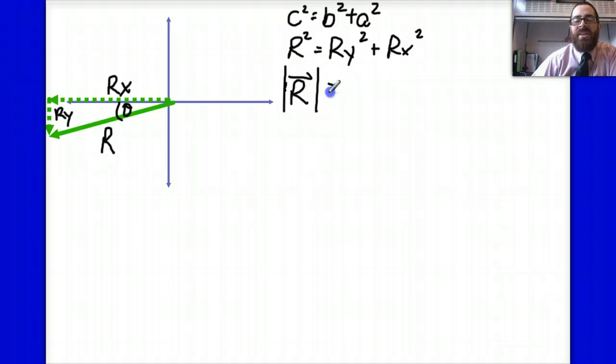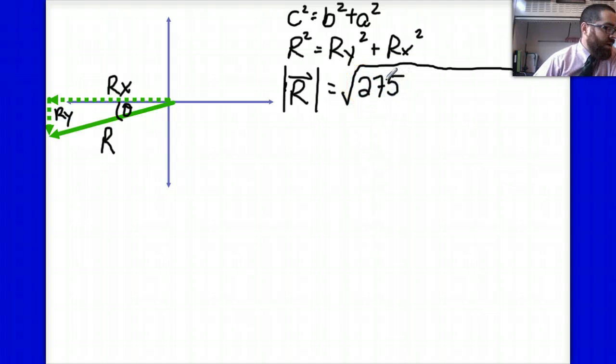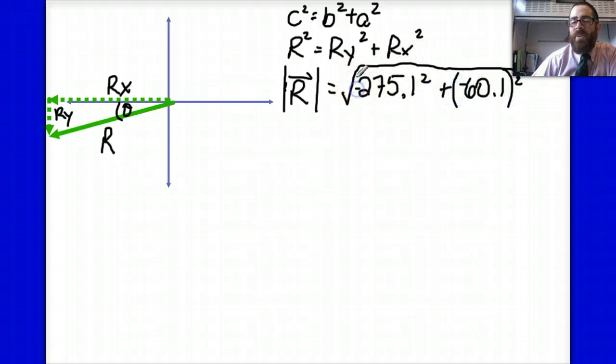C squared is equal to B squared plus A squared, where B and A are the y and x components. So I can say RY squared plus RX squared. Solving for the magnitude of my resultant, another way of describing the magnitude of your resultant is to put the vector in absolute value bars. In other words, the answer to this is simply going to be how big the resultant is, but it's not going to answer the question, what is the direction? So I'm going to go ahead and put those numbers in, 275.1 squared, I'm going to leave the units off, it gets a little messy for me, plus 60.1 squared. Now technically these are negative components, but a negative squared yields a positive. I'll put them in anyway to be formal about this, recognizing that I won't get any negative signs underneath that root.